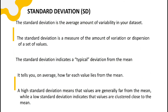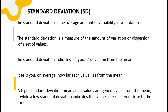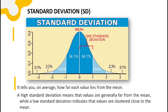Coming to the next concept: standard deviation. The standard deviation is the average amount of variability in a data set. It is a measure of the amount of variation or dispersion of a set of values. It indicates a typical deviation from the mean — it tells you on average how far each value lies from the mean. A high standard deviation means that values are generally far from the mean. A low standard deviation indicates that values are generally close to the mean.